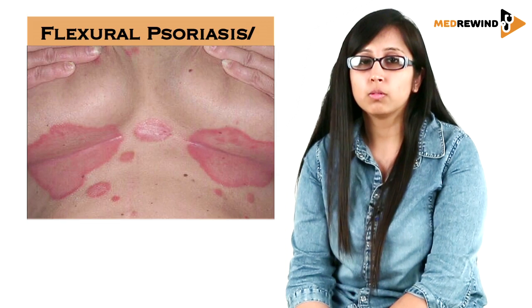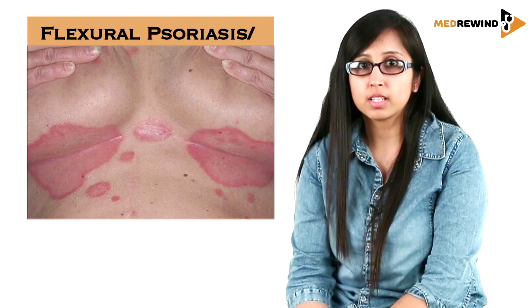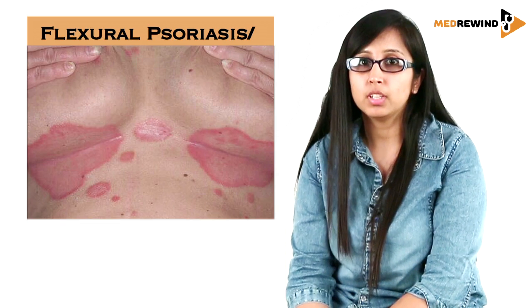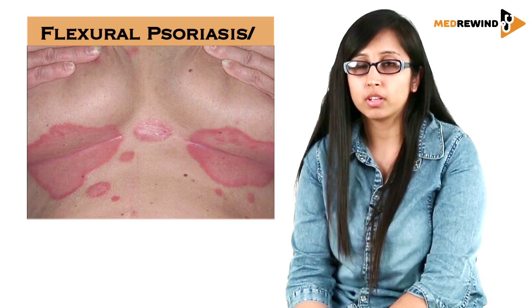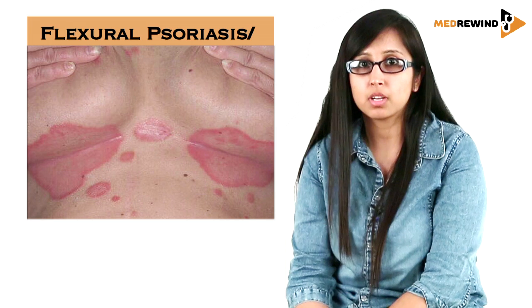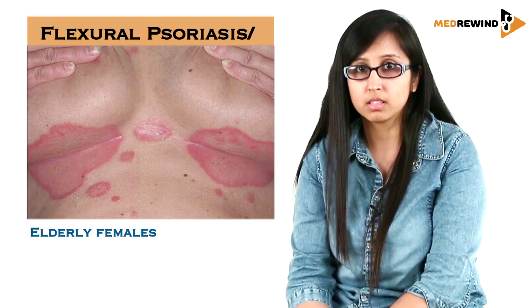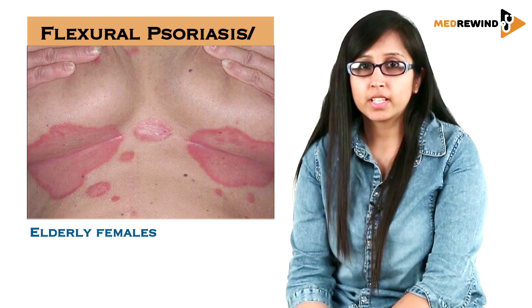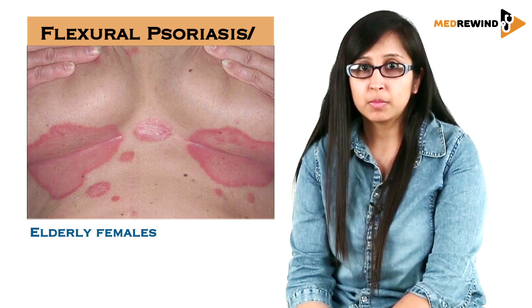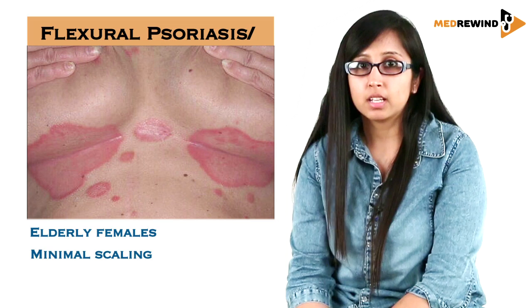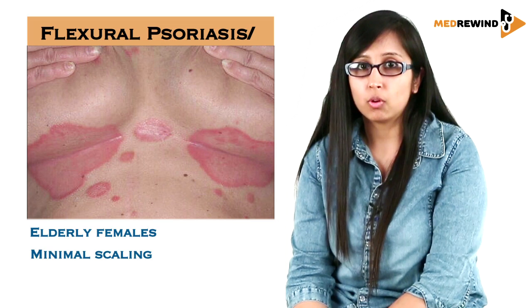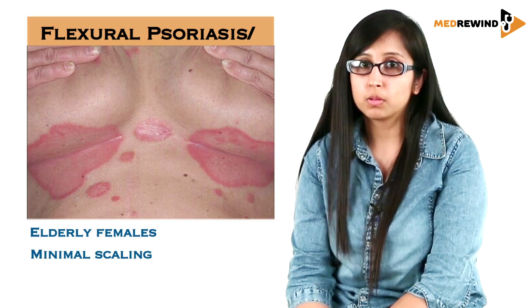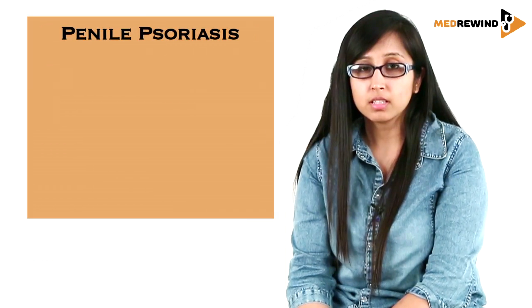The next type is flexural psoriasis, also known as inverse psoriasis. It is the inverse of the most common chronic plaque psoriasis, which occurs on the extensors, as this type occurs on the flexors. The flexors involved include the inframammary area, the axilla, and the groin. There is also minimal scaling in this type.